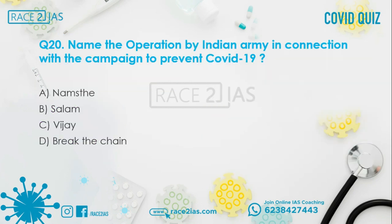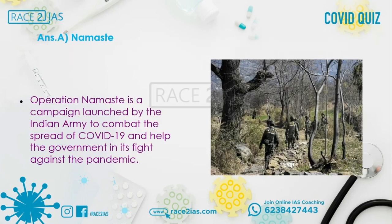Question number 20: Name the operation launched by the Indian Army in connection with the campaign to prevent COVID-19. Option A: Namaste. Option B: Salaam. Option C: Vijay. Option D: Break the Chain. The right answer is Option A, Namaste. Operation Namaste is a campaign launched by the Indian Army to combat the spread of COVID-19 and help the government in its fight against the pandemic.